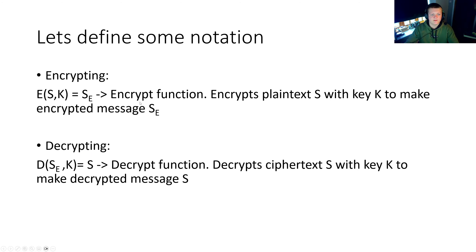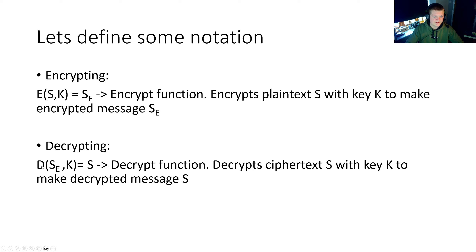Let's define some notation because there's a lot going on. We have an encrypting function E which takes two parameters, S and K. S is the plain text, so when we encrypt data we say we're encrypting S, our plain text data, with the key K — and when you encrypt it you get S subscript E, which is the encrypted ciphertext data. Decrypting works in a similar way: the D function takes two parameters — S_E, your encrypted ciphertext, and K — and returns the plain text S after decrypting. I'm going to use this same notation for public and private key cryptography.